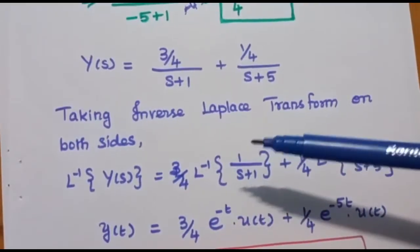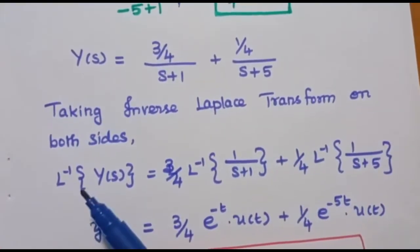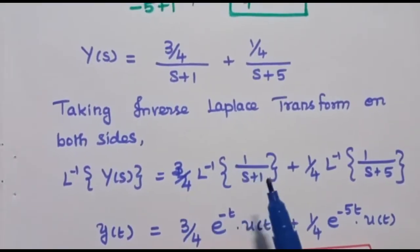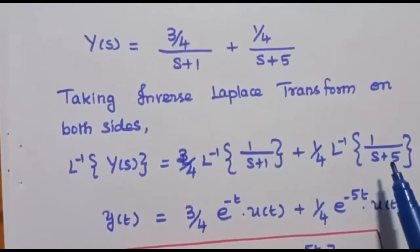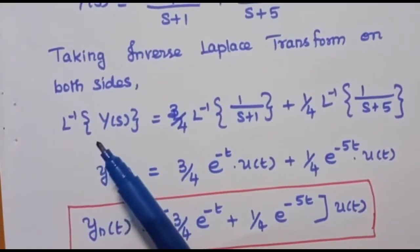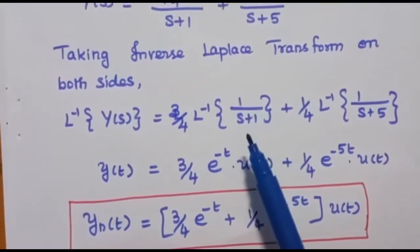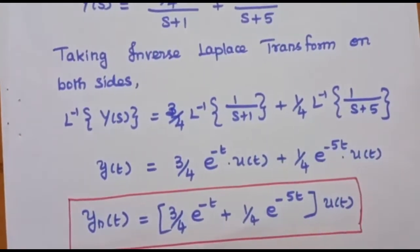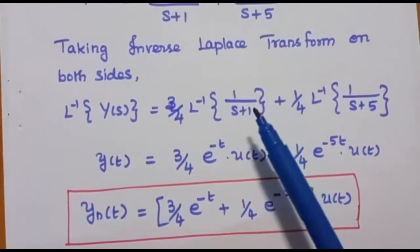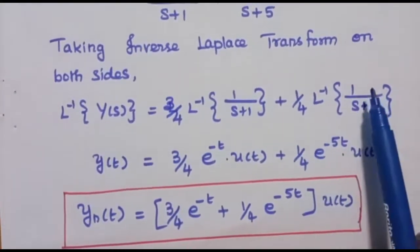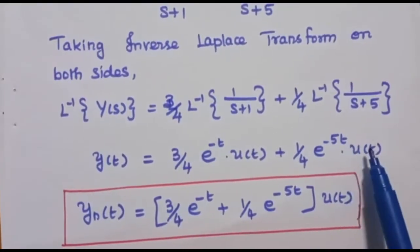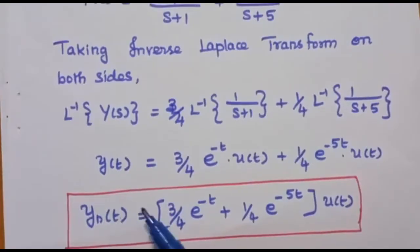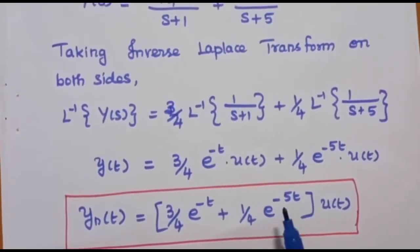Taking the inverse Laplace transform on both sides, inverse Laplace of Y of s equals 3 by 4 times inverse Laplace of 1 over s plus 1 plus 1 by 4 times inverse Laplace of 1 over s plus 5. Using the formula that inverse Laplace of 1 over s plus a is e power minus at times u of t, the natural response y_n of t is equal to 3 by 4 e power minus t plus 1 by 4 e power minus 5t, all multiplied by u of t. This is the answer.